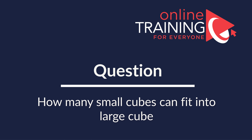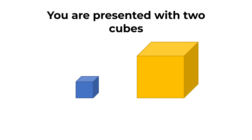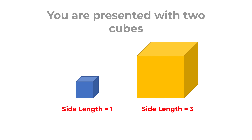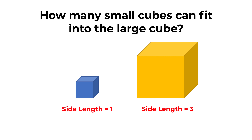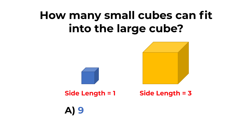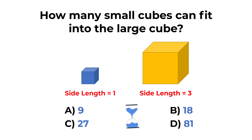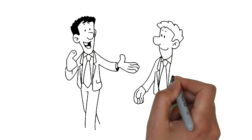Here's a cool question which you frequently see on the test. You are presented with two cubes: one has a side length of 1 unit, and the second larger cube has a side length of 3 units. How many small cubes can fit into the large cube? Choices: A, 9; B, 18; C, 27; D, 81. Give yourself 20 to 30 seconds — that's about as much time as you get in the real test.